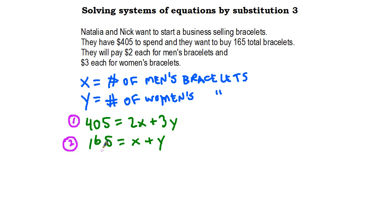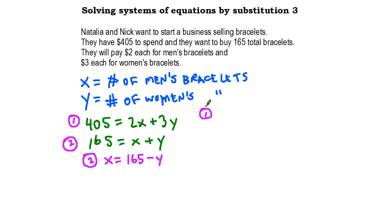The numbers are bigger, but that's okay — we're not afraid. Since previous examples got y by itself, I'm going to get x by itself. I'll rewrite equation 2 as x = 165 − y. Then I'm going to substitute 165 − y in place of x into equation 1: 2(165 − y) + 3y = 405.